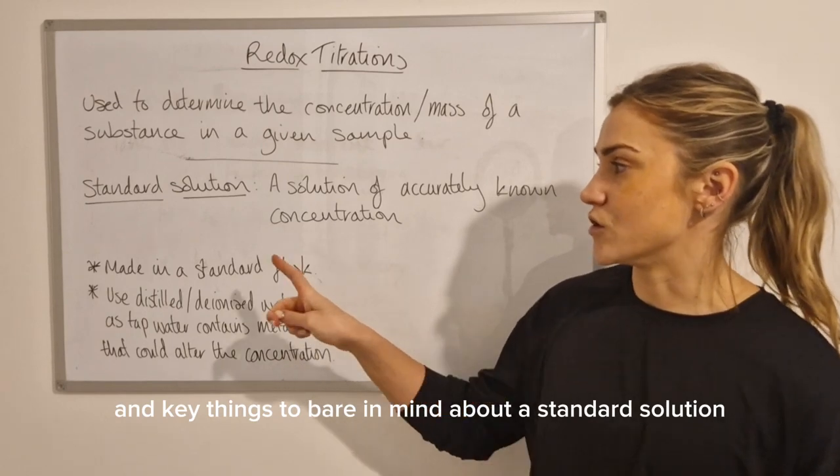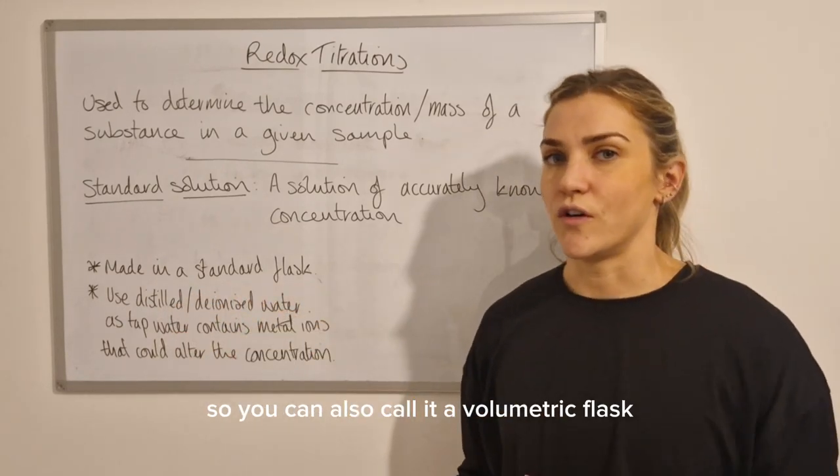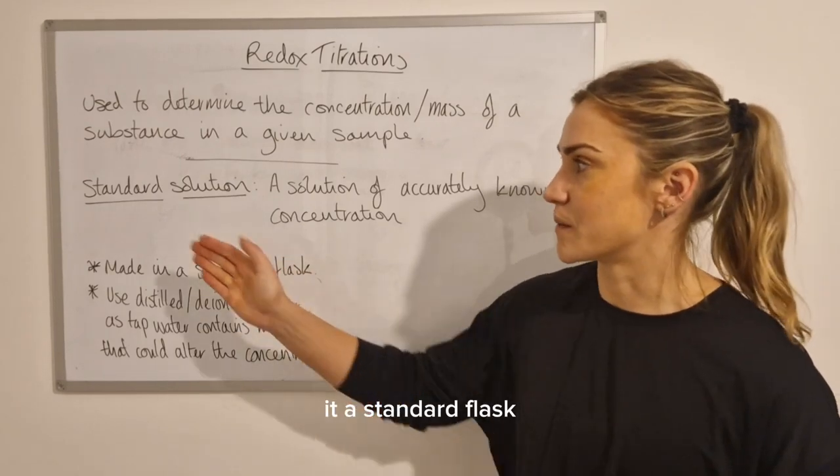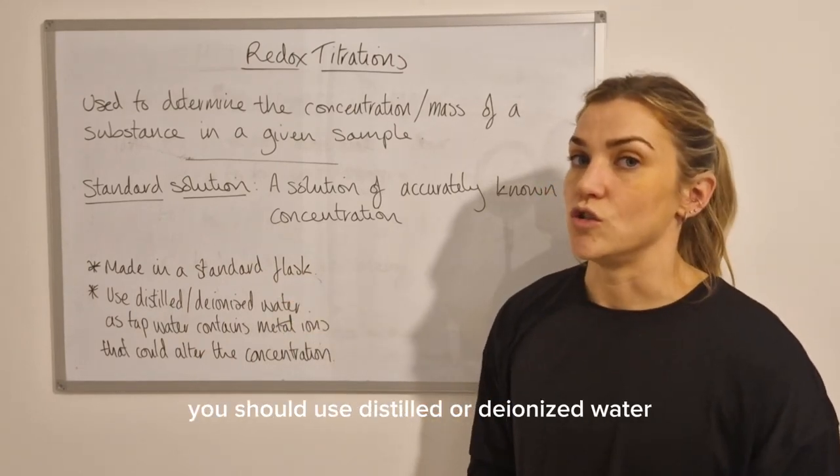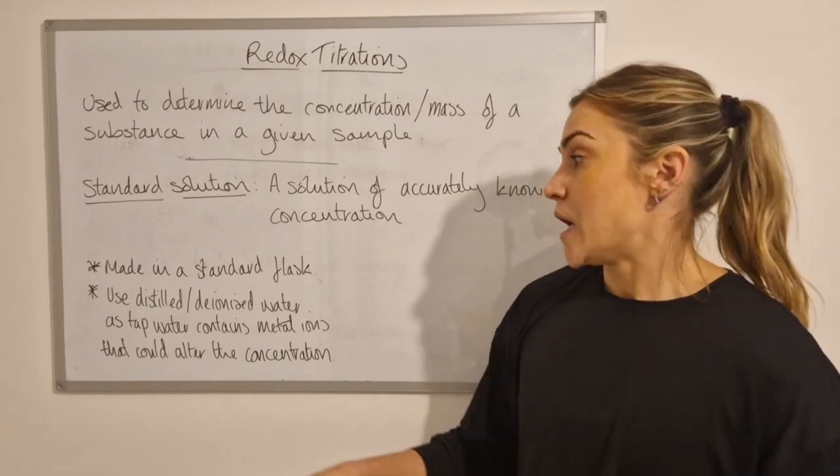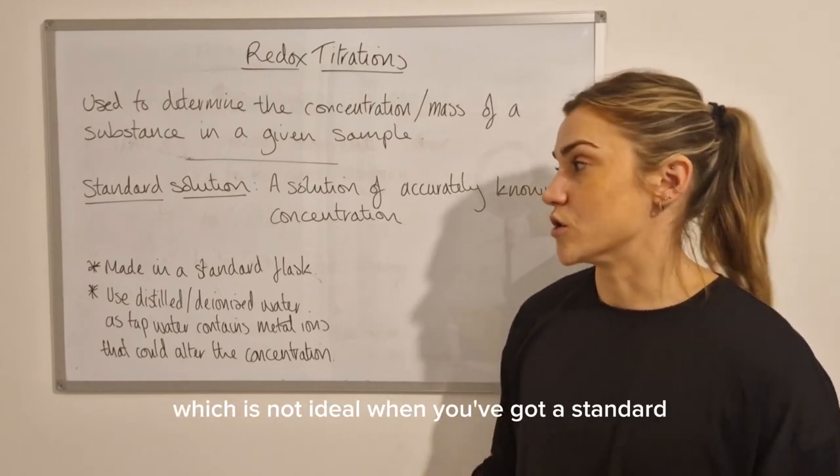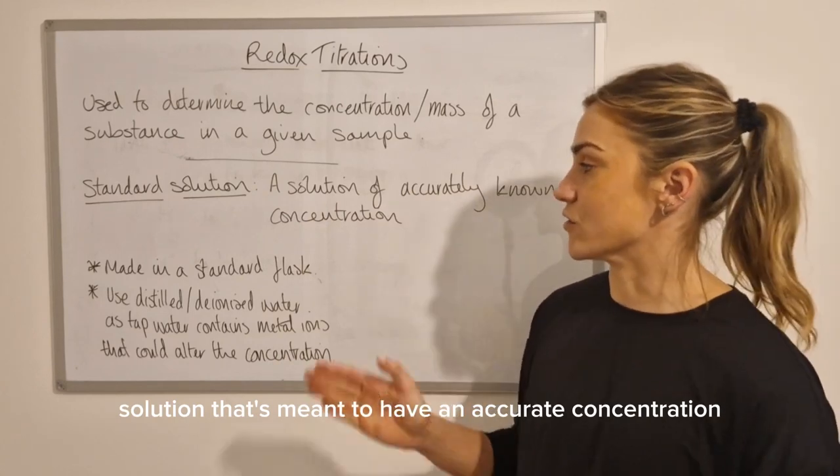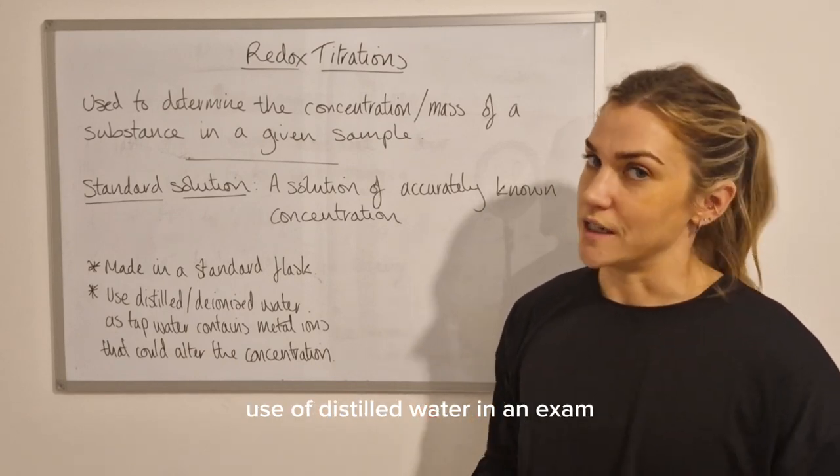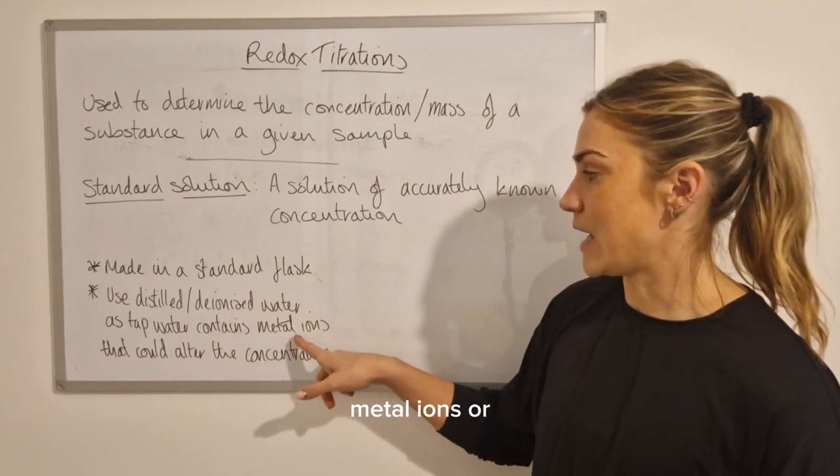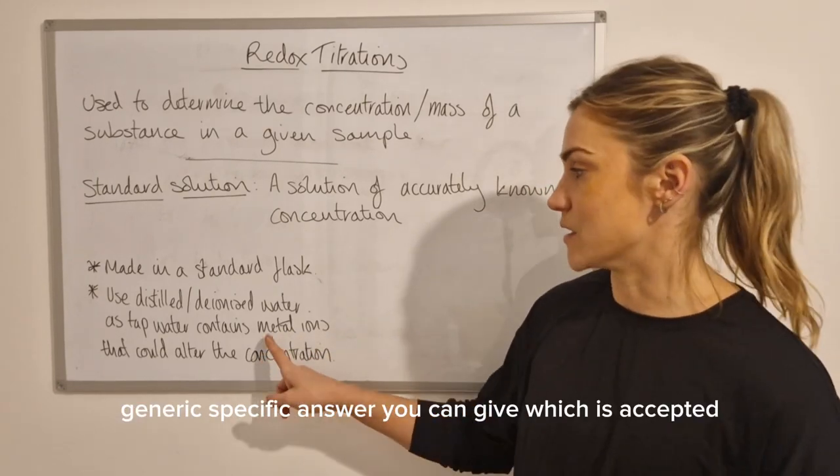Key things to bear in mind about a standard solution that make your life a little bit easier is that they're made in a standard flask. You can also call it a volumetric flask, but I find it easier to remember if you just call it a standard flask because it's a standard solution. So you make a standard solution in a standard flask, and when you are making them you should use distilled or deionized water because tap water contains metal ions that could alter the concentration of your solution, which is not ideal when you've got a standard solution that's meant to have an accurate concentration.